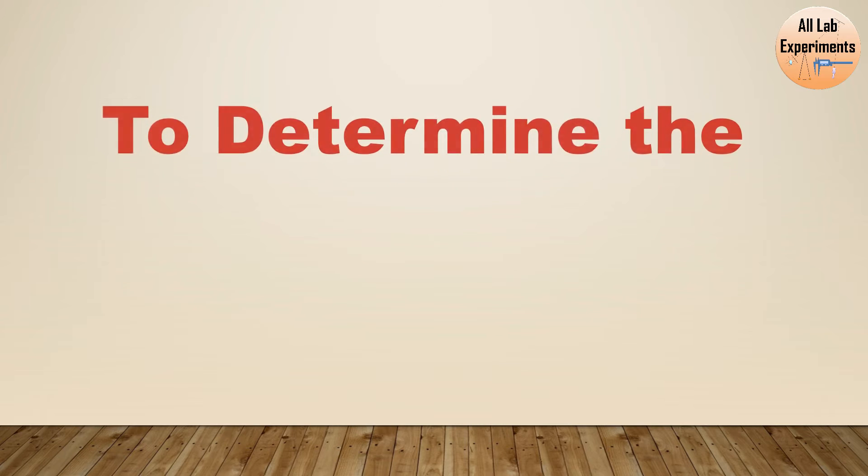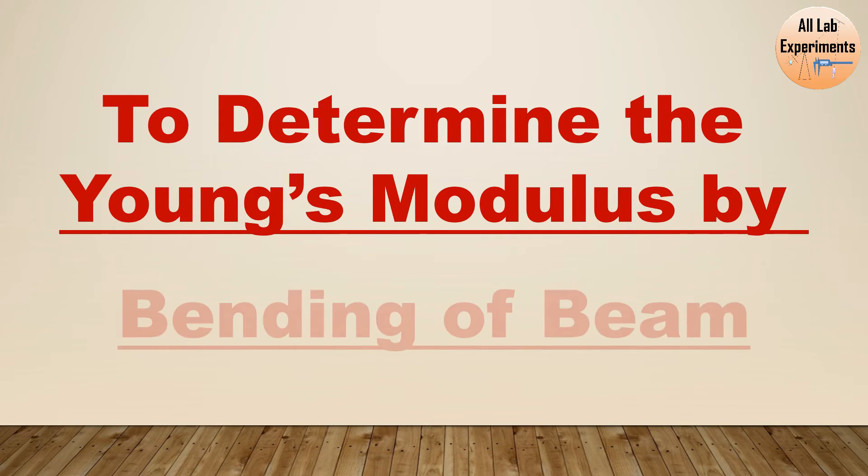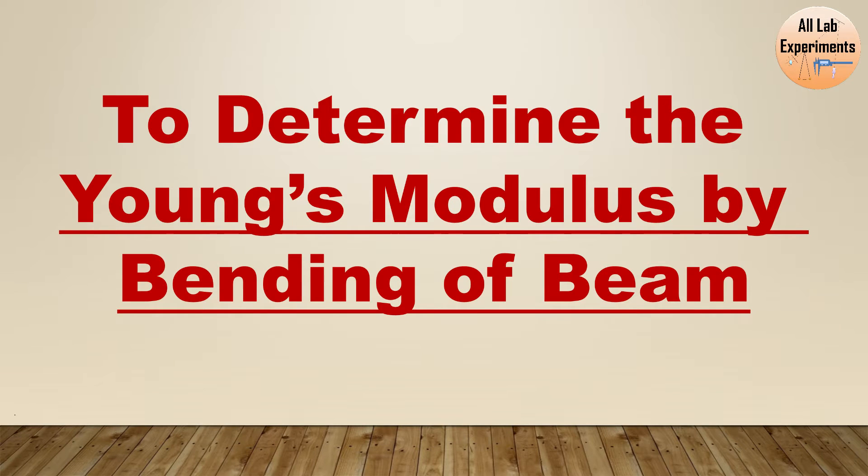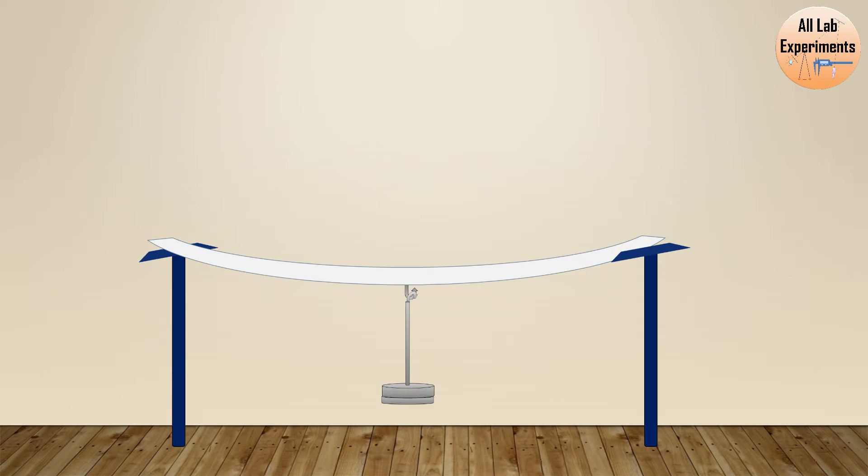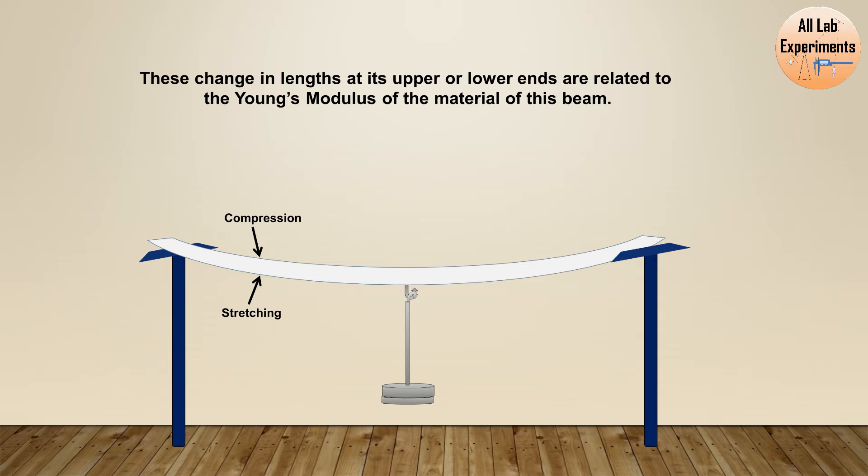Hello friends, today we are going to determine the Young's Modulus of a material by bending of its beam. This is a very simple experiment. Whenever we bend a rod, one of its sides is compressed and another side is stretched longer. Overall, this rod opposes this change, and this quantity is related to the Young's Modulus of the material. That's why we can calculate Young's Modulus by bending of beam. Let's start this experiment and see what are the basic necessities.